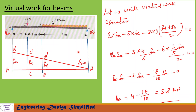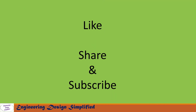Now let us write the virtual work equation: plus RA × delta A (RA acts upwards and displacement is upwards), minus 5 × delta C (5 kN acts downwards), minus 2 × 3 × (delta D + delta B) / 2 for the UDL = 0. Substituting values for delta A, delta C, and delta D, with delta B = 0, and simplifying, we get reaction at A: RA = 5.8 kN. That's all for today's video. If you like this content, please like, share, and subscribe. Thanks for watching.